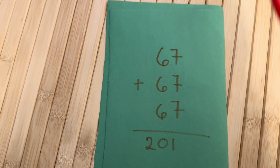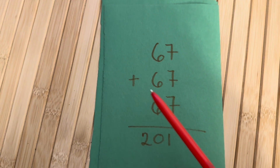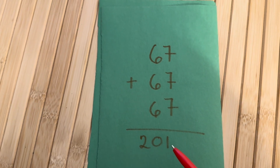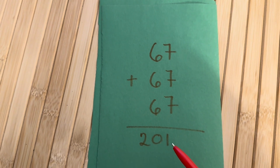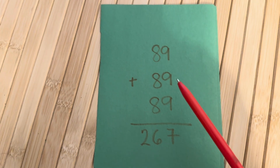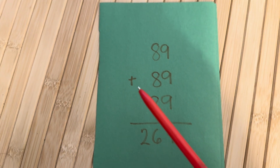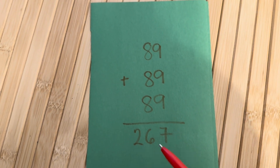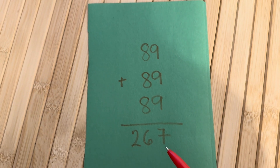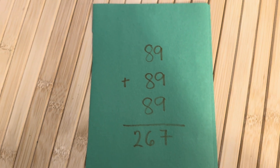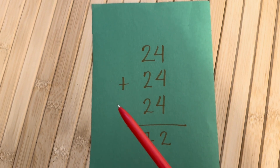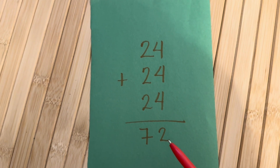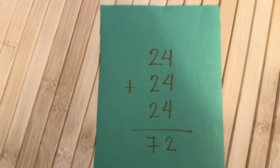Here is more example. 67 plus 67 plus 67 is equals to 201. 89 plus 89 plus 89 is equals to 267. 24 plus 24 plus 24 is equals to 72.